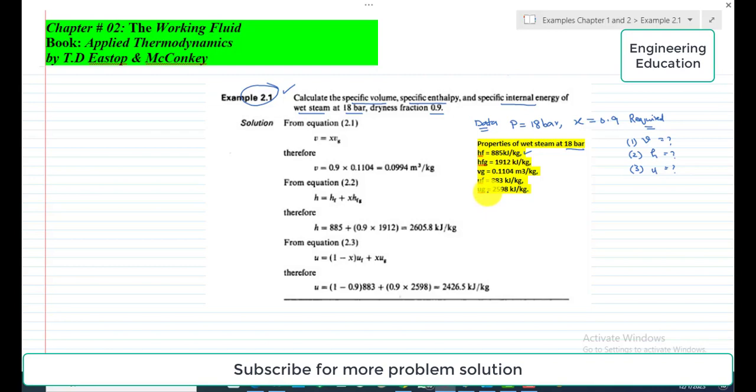Represented by small ug, it is 2598 kilojoules per kilogram. So now coming to the solution of this problem.